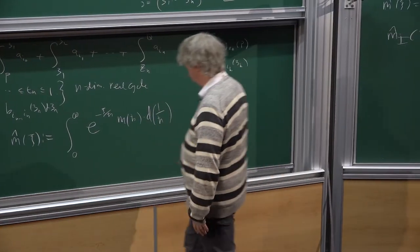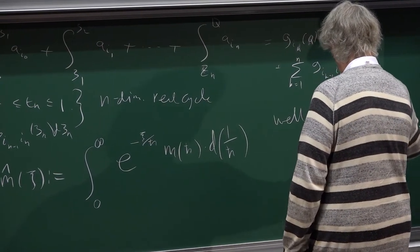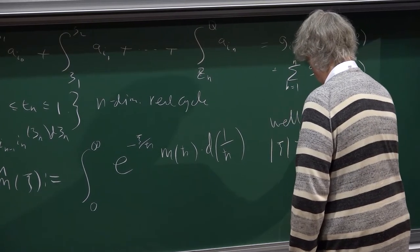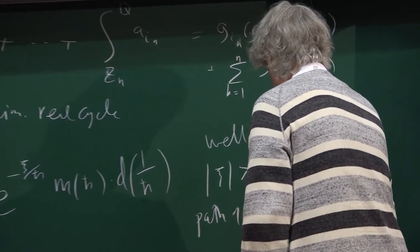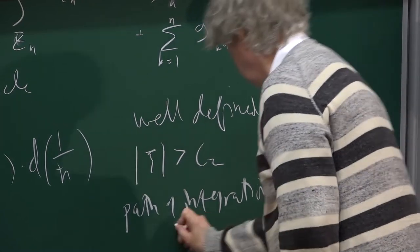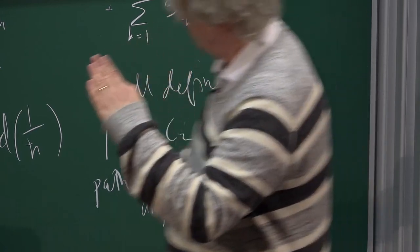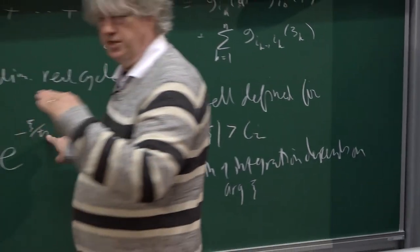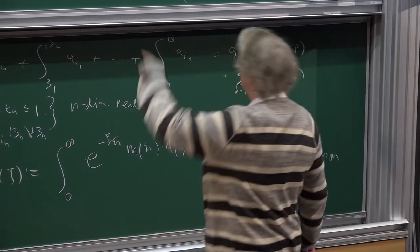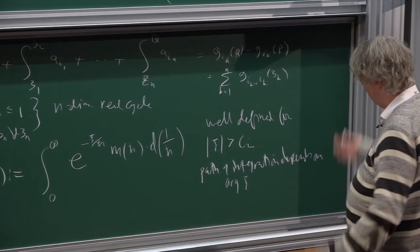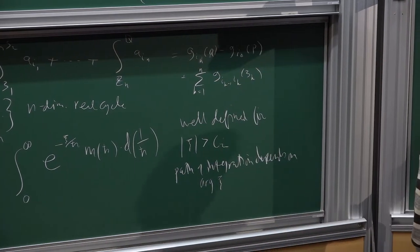The first comment is that this path of integration depends on C. This is well defined for absolute value of C strictly bigger than the constant C2. The path of integration from zero to infinity is going to depend on the argument of C. If C is big enough, there always exists a path of integration with the property that this is exponentially decreasing as one over h-bar goes to infinity.